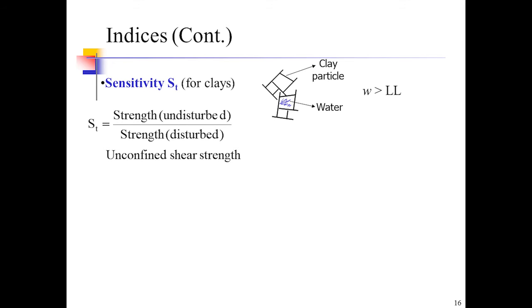Sensitivity of soil equals strength undisturbed divided by strength disturbed. The unconfined strength ratio is the sensitivity index, with ranges from low sensitive to high sensitive.